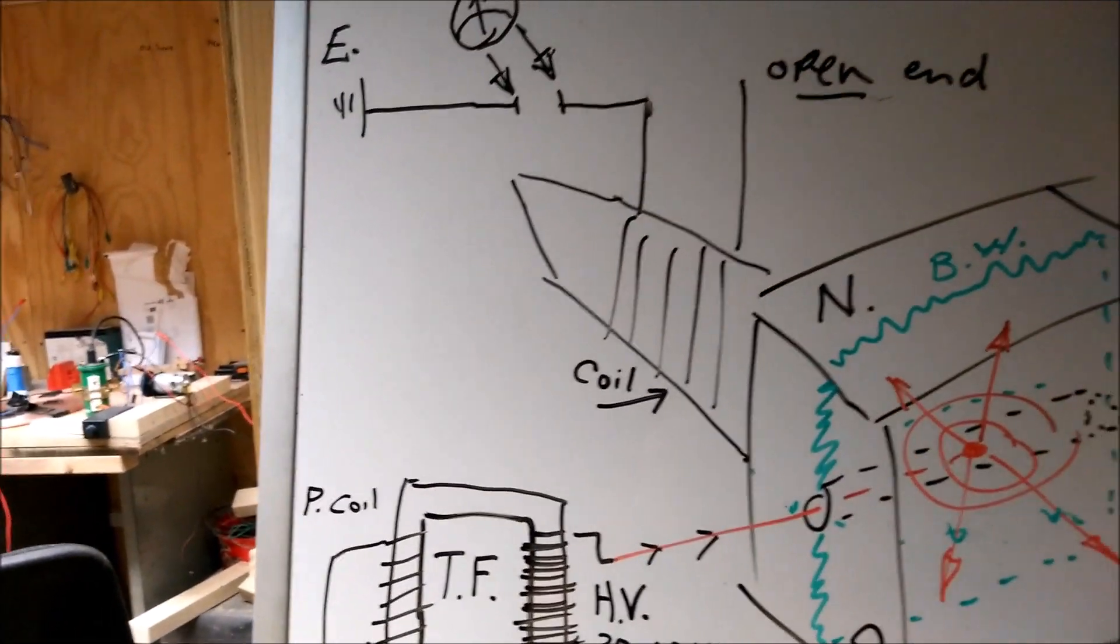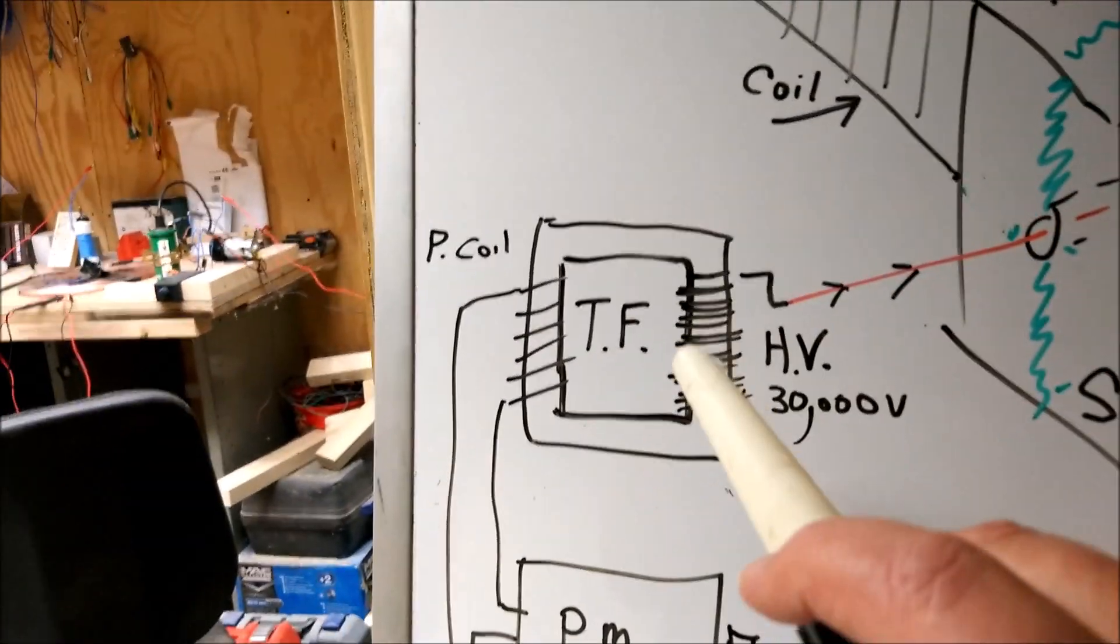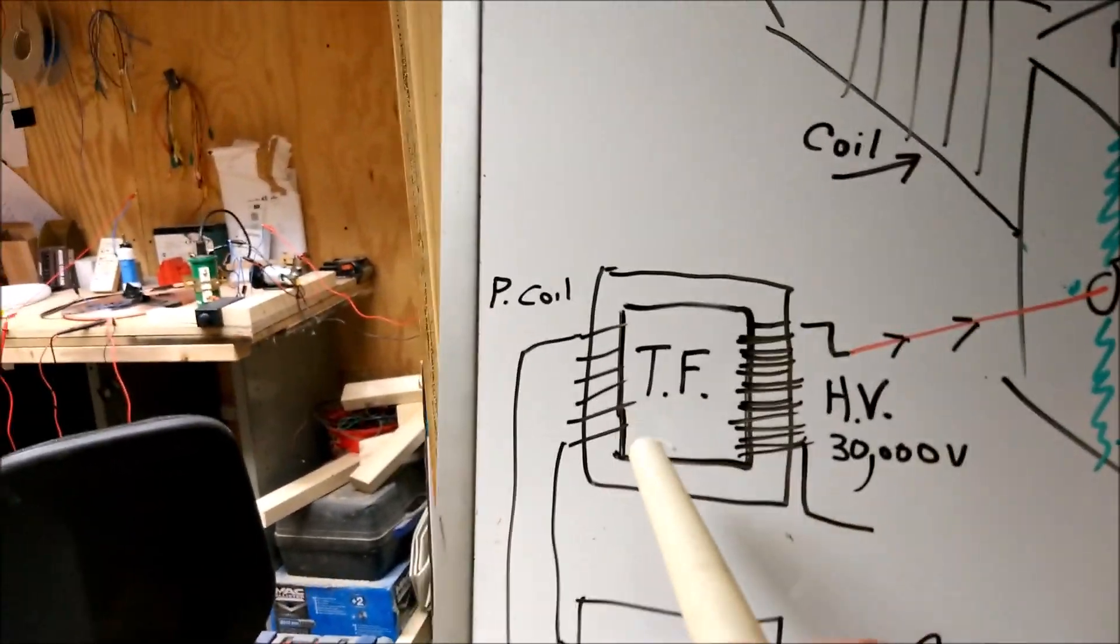The actual setup is a power supply at 18 volts, a pulse width modulator, and a transformer which transforms from 18 volts to 30,000 volts.